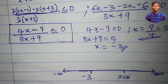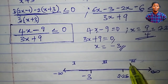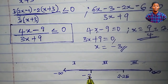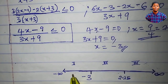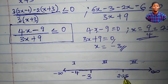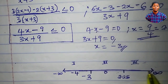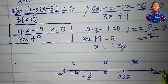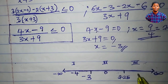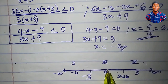This is our number line, divided into 3 regions: region 1, region 2, and region 3. Between negative infinity and minus 3, we can choose minus 4. Between minus 3 and 2.25, we can choose 0. Between 2.25 and positive infinity, we can choose 3. We'll use each of these numbers to test which regions satisfy the inequality.